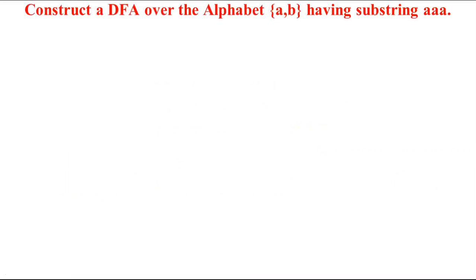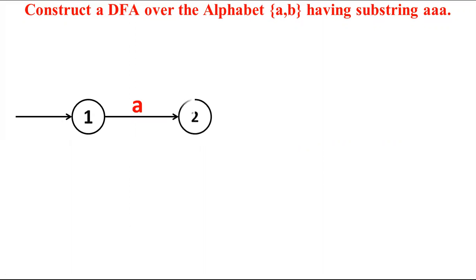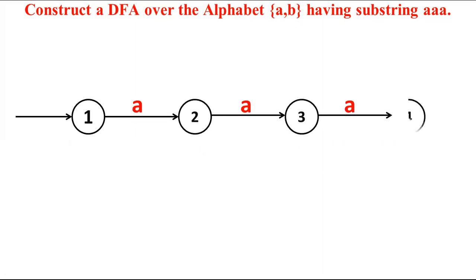We need to construct a DFA having 'aaa' as a substring. First, we design the skeleton string with minimum criteria 'aaa'. Since 'aaa' is a substring of itself, we should try to accept that string. The last state must be with a double circle — an accepting state — to accept this particular string.